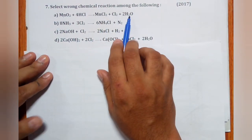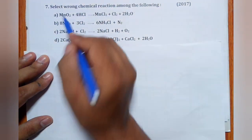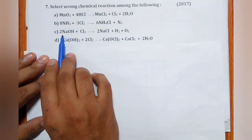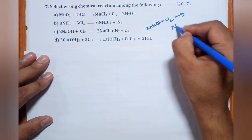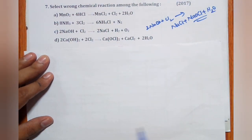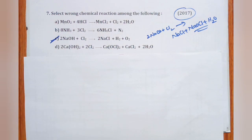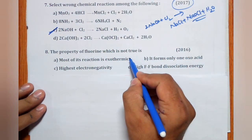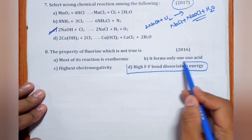Question 7 (2017): Select the wrong chemical reaction. MnO2 + HCl → Cl2 + MnCl2 + H2O is correct. 8NH3 + Cl2 → NH4Cl + N2 is correct. Ca(OH)2 + Cl2 → bleaching powder is correct. But 2NaOH + Cl2 should give NaCl + NaOCl + H2O — if NaClO3 is written instead of NaOCl, the reaction is wrong. Hence the incorrect reaction is the one producing NaClO3 under cold dilute conditions.